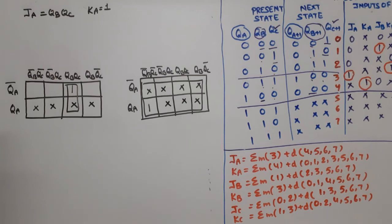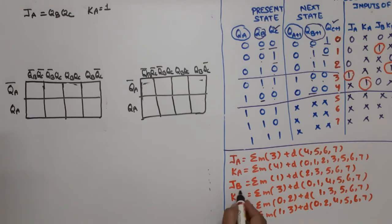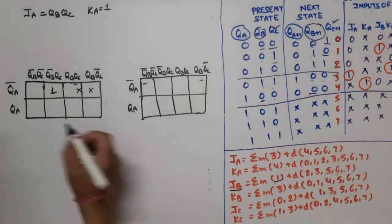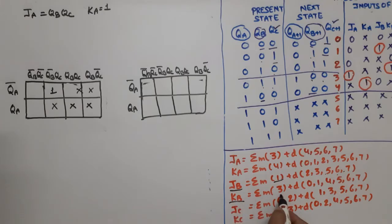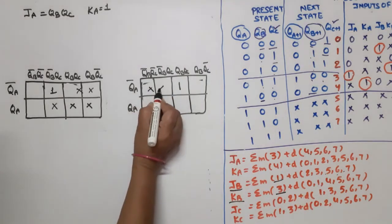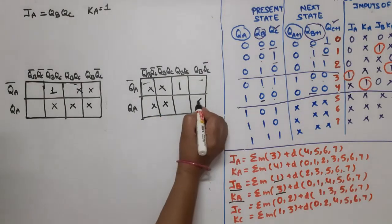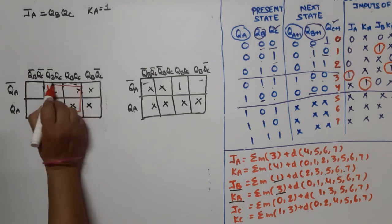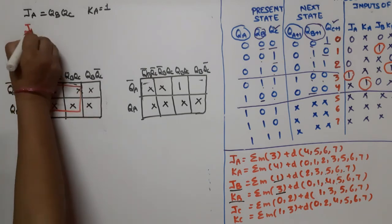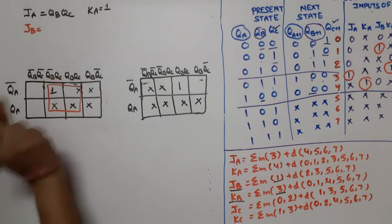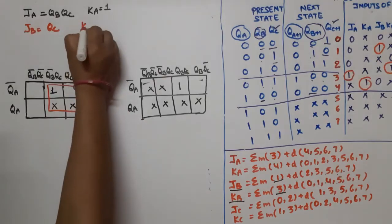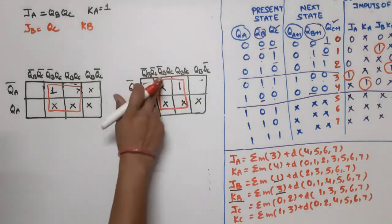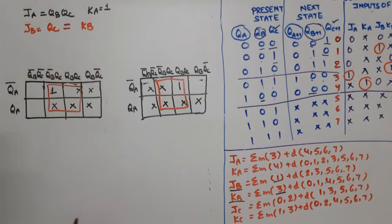For JB, the minterm is at position 1 with don't cares at 2, 3, 5, 6, 7. When simplified, we get a quad using both rows. The common variable is QC, so JB = QC. For KB, the minterm is at position 3 with don't cares at 0, 1, 4, 5, 6, 7. This also simplifies to a quad, giving KB = QC. So both JB and KB are equal to QC.